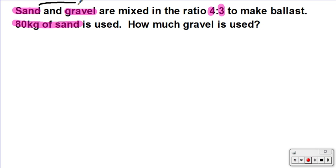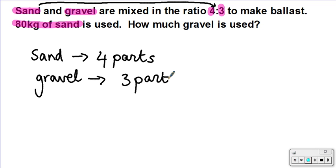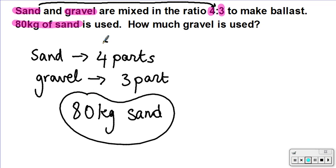For the sand we have four parts, and for the gravel we have three parts. We also know that we have 80 kg of sand being used. I need to figure out how much gravel I need. We have to share things equally, so I'm going to use the 80 kg and the four parts to figure out how much one part is using the unitary method, then multiply that answer by three parts to find how much gravel I need.